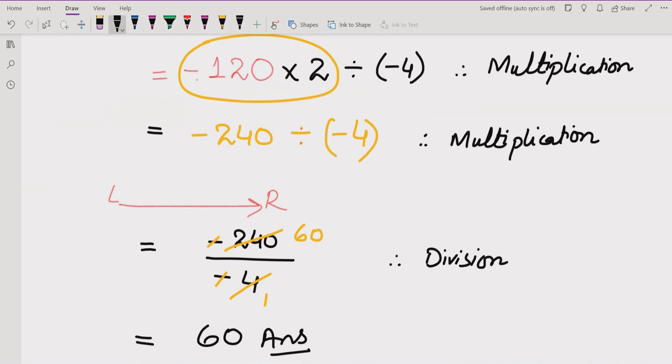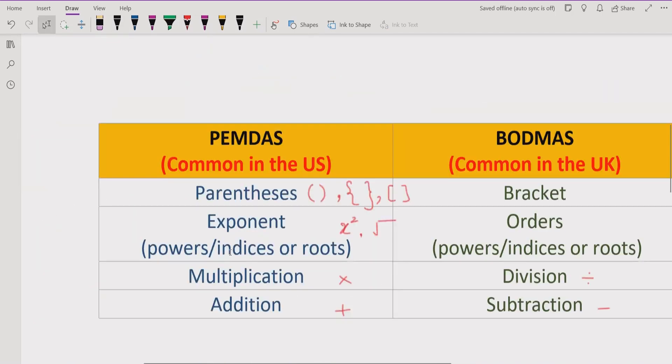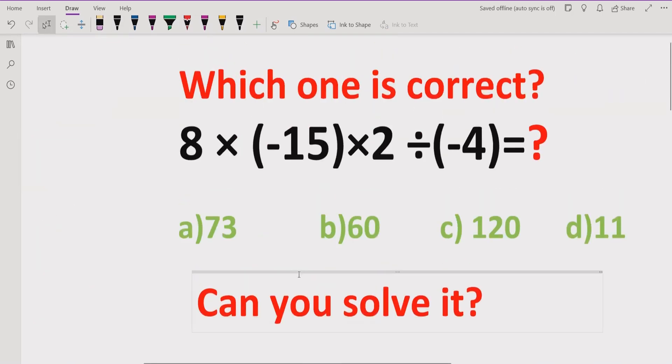If you see on the answer list, you have a) 73, b) 60, c) 120, and d) 11. So the correct answer of this expression is 60, option b. I hope you understand how you can solve this simple expression using BODMAS and PEMDAS rule and how you can get the correct answer.